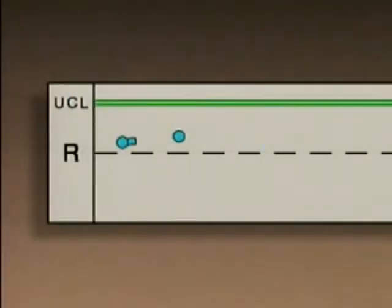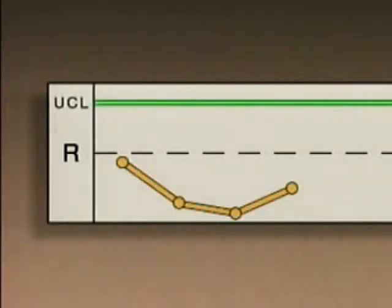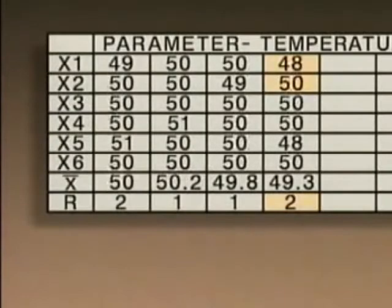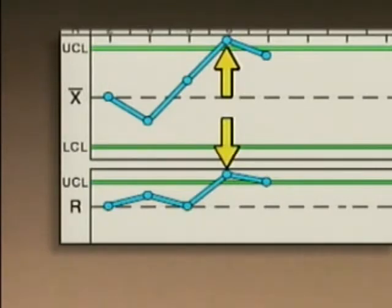The patterns on R-charts have different meanings. For example, plotted values falling near the upper control limit on an R-chart indicate that there's too much variation in the data — in other words, the difference between the largest value and the smallest value is greater than normal. When plotted values fall near the lower control limit on an R-chart, there is less variation than normal in the data. If values exceed the control limits on an R-chart or an X-bar chart, the process is out of control.